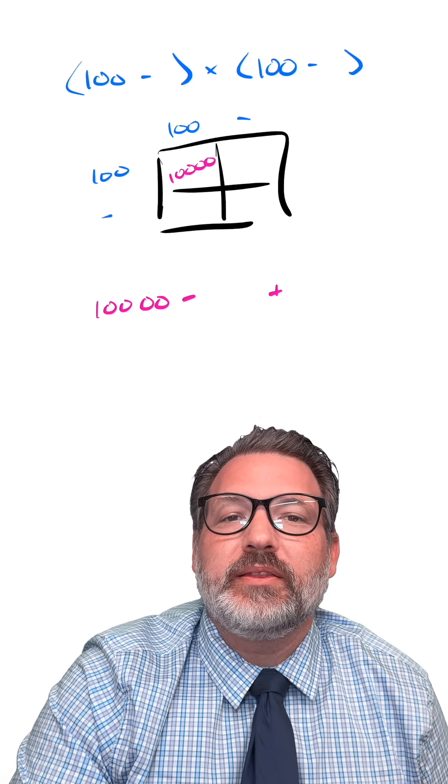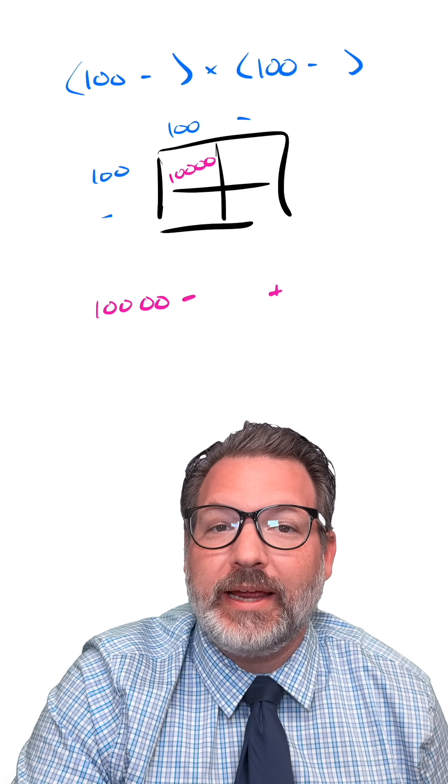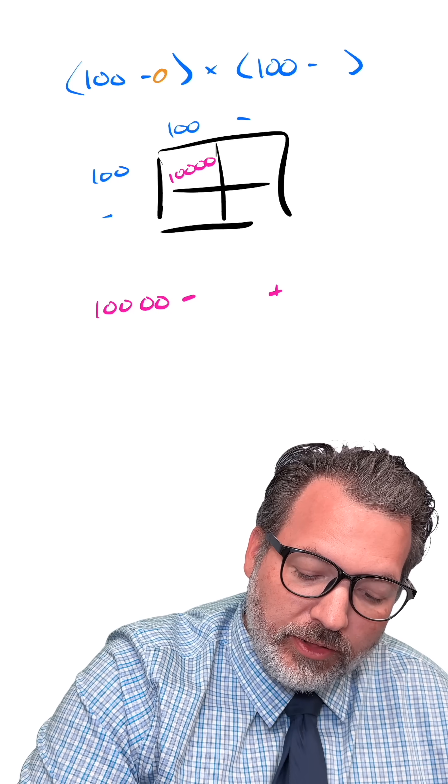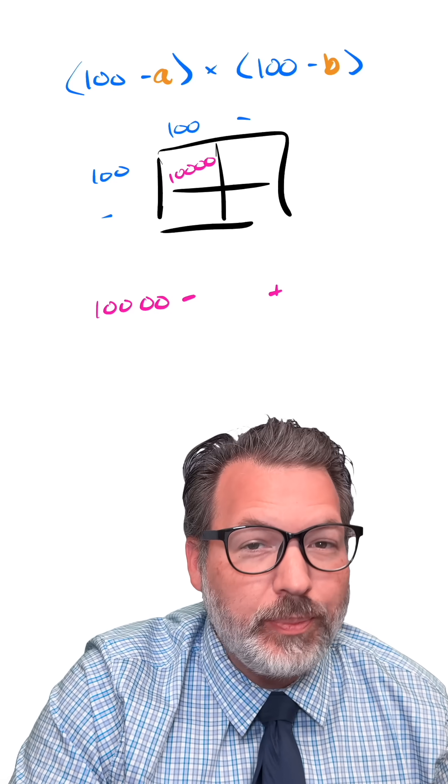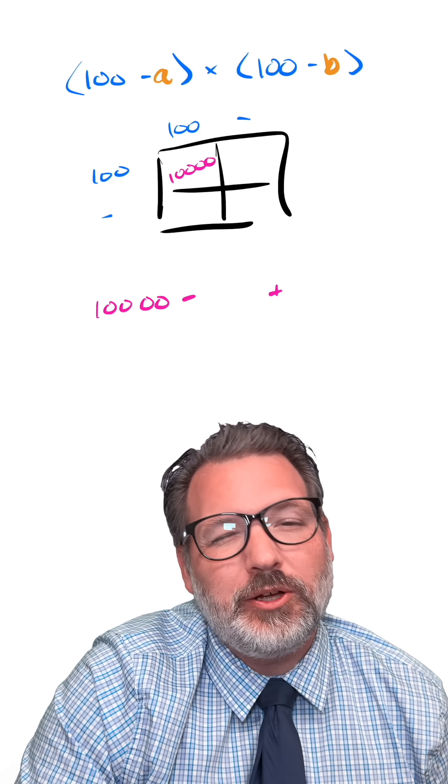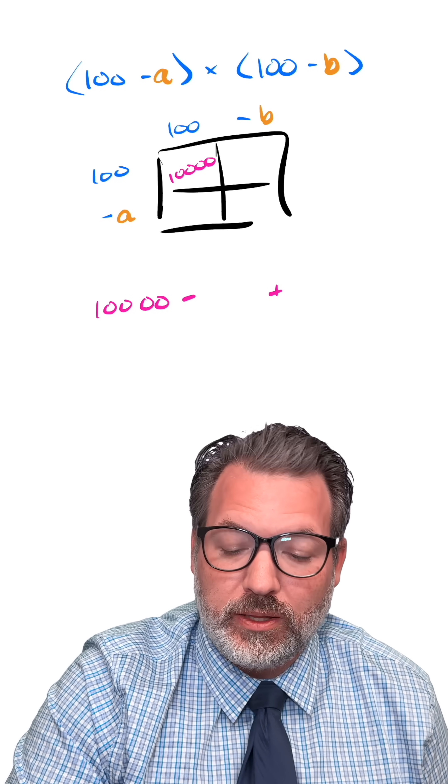Finally, we can represent this in general for any two numbers that are close enough to 100, not just 94 and 97. Consider the numbers 100 minus A and 100 minus B, where A and B are small enough that our numbers would still be considered close to 100. When we expand this more general product using the box,